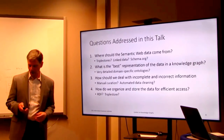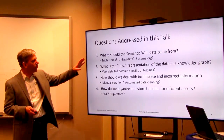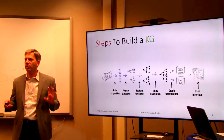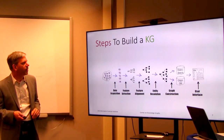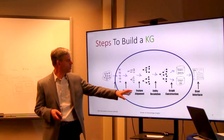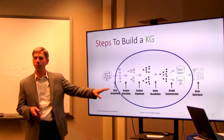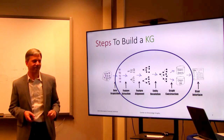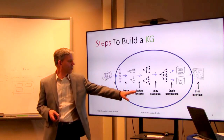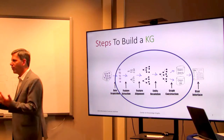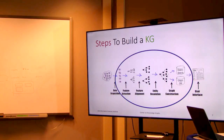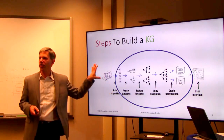Now I'll go through the organization of the talk. I want to talk about some of the steps we use in building a knowledge graph. In particular, I'll focus on the core ones in the middle: feature extraction, alignment, entity resolution, and then turning that into some kind of knowledge graph. There's also the important question of how we query, visualize, and analyze it, and where all the information comes from.